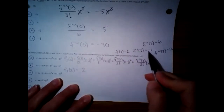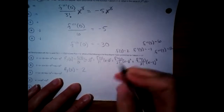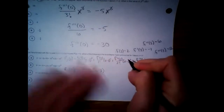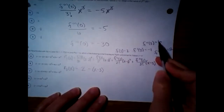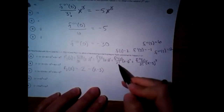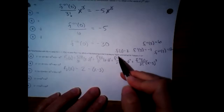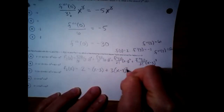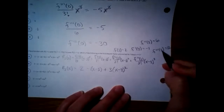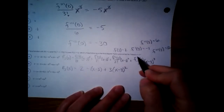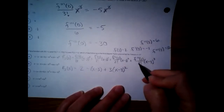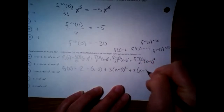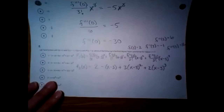First derivative at 3 is negative 1, so that's negative 1 over 1 factorial — which is negative 1 — times x minus 3. Continuing through the remaining terms using the second and third derivative values at 3.